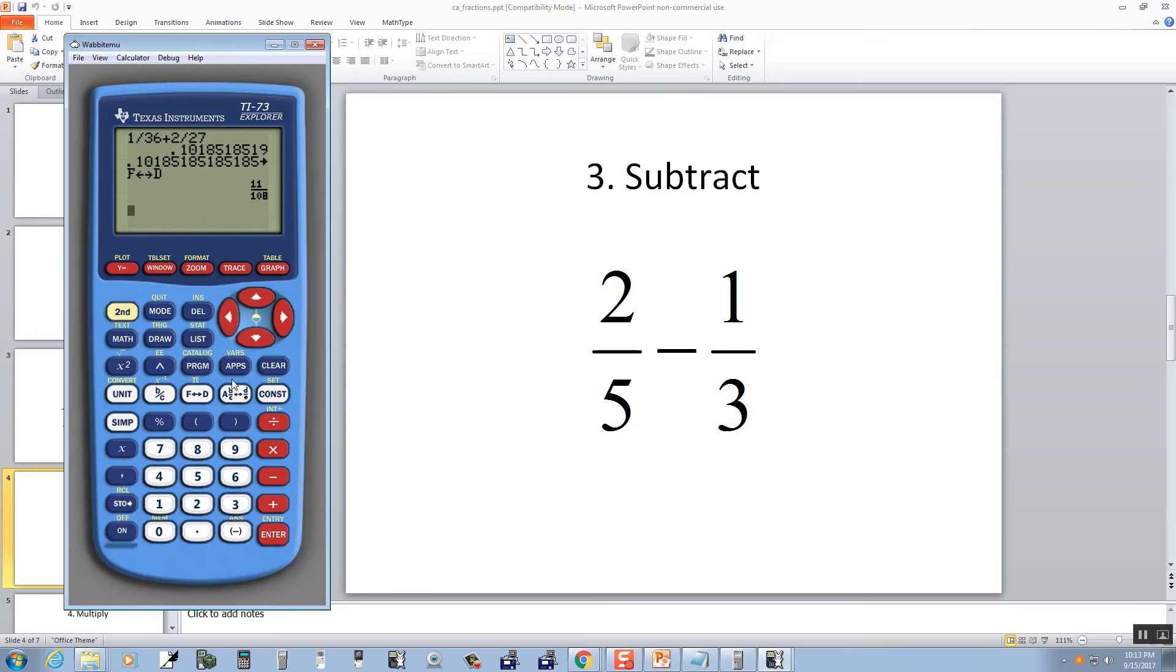Subtraction. Clear the screen. 2 divided by 5 minus 1 divided by 3. Enter. We get a decimal, so I'll push the F, D, and then enter. And our answer is 1 over 15.